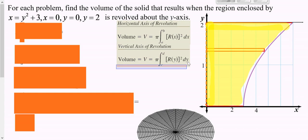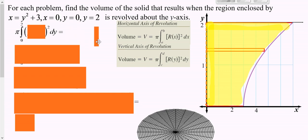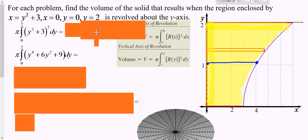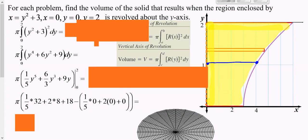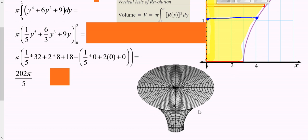We're going around the y-axis, which is a vertical axis of revolution, so we're dealing with y's. Your bounds are how far up and down your shaded region goes — from zero up to two. Your radius goes from what's on the right to what's on the left, which is your function minus zero, just your function. FOIL that out, integrate each piece, plug in 2 minus what you get at zero, and we get 202 pi over 5. If you take that yellow shape and revolve it, you get something similar to this.